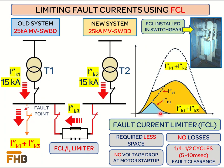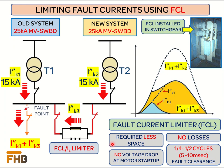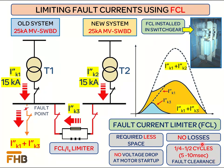The combined value, which is the sum of IK1 and IK3, will remain significantly less than the combined value of IK1 and IK2. FCL brings certain advantages compared to current limiting reactors: it requires less space and can be installed within a switchgear; since the current path is through a copper bar, no losses are introduced by the FCL; there will not be any additional voltage drop at the time of motor startup; and the biggest advantage is the fault clearance time by FCL, which is less than half a cycle.